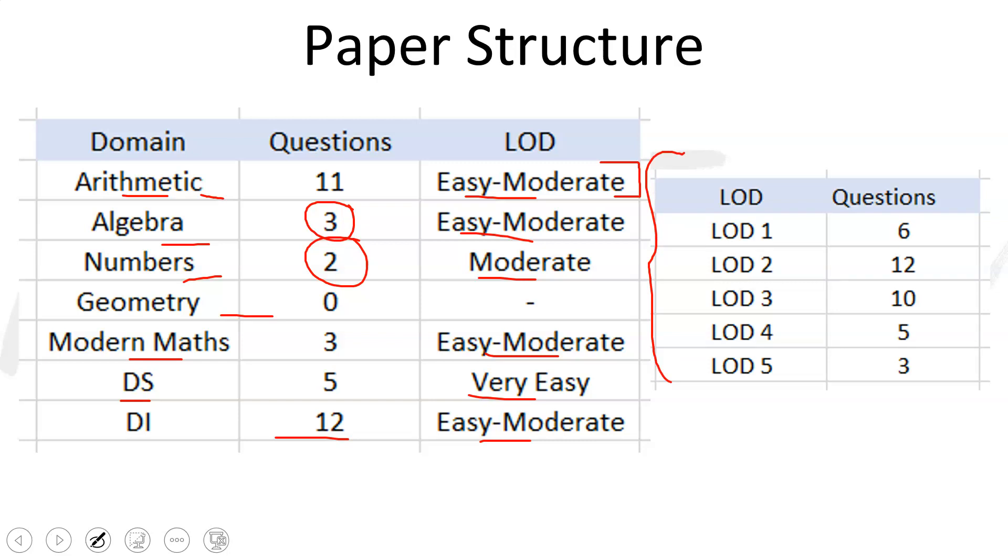And this is the level of difficulty chart. Out of those 36 questions, level 1 questions, level 2 questions, these are the easy level questions. Level 3 is the moderate level. Level 4 also I would call it moderate to difficult, and level 5 are the difficult ones. There were only 3 difficult questions in the entire paper. And if you leave out the last 8 questions, that is level 4 and level 5, the remaining 28 questions were solvable.